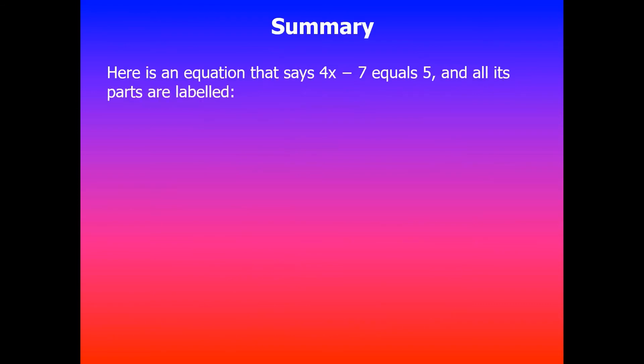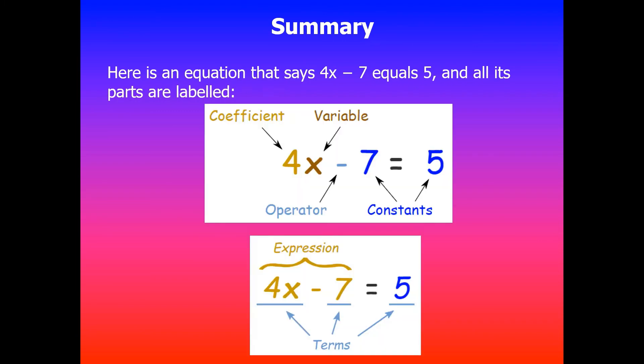In summary, if an equation is given by 4x take away 7 equals 5, then all of its parts are labeled as: 4 being the coefficient because that's the number in front of x and it's multiplied by variable x. x is the variable, take away is the operation there and negative 7 and 5 are the constants. And the expression 4x take away 7 on the left hand side is the expression and there are three terms. 4x is one term, take away 7 is the second one and 5 is the third term.